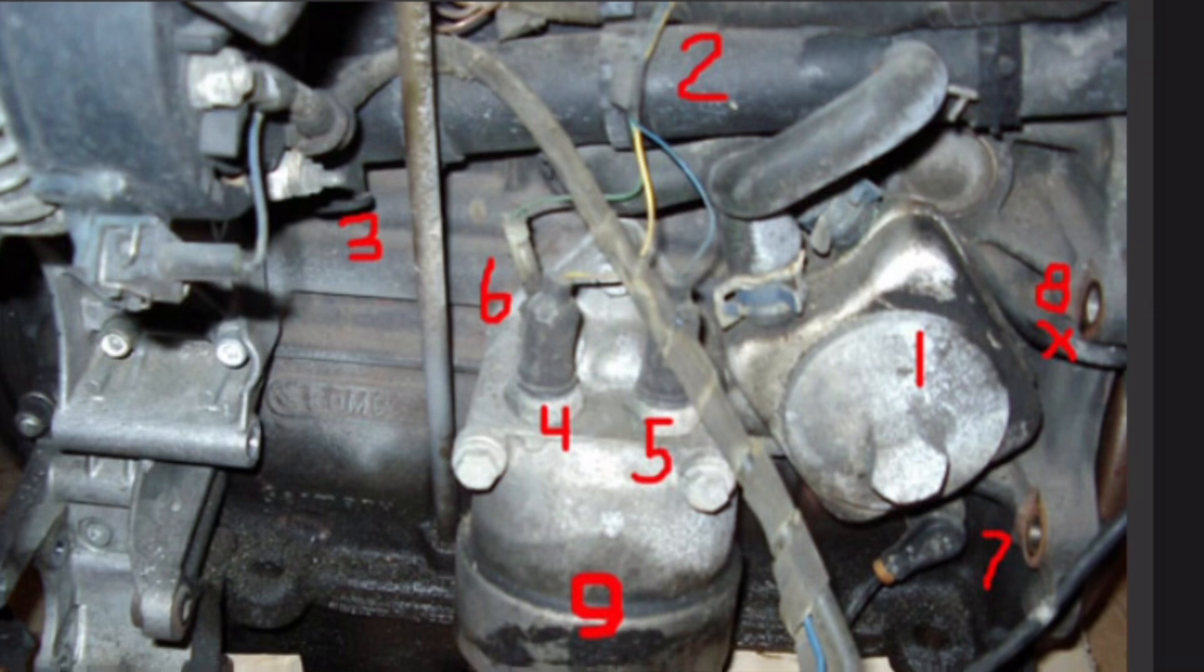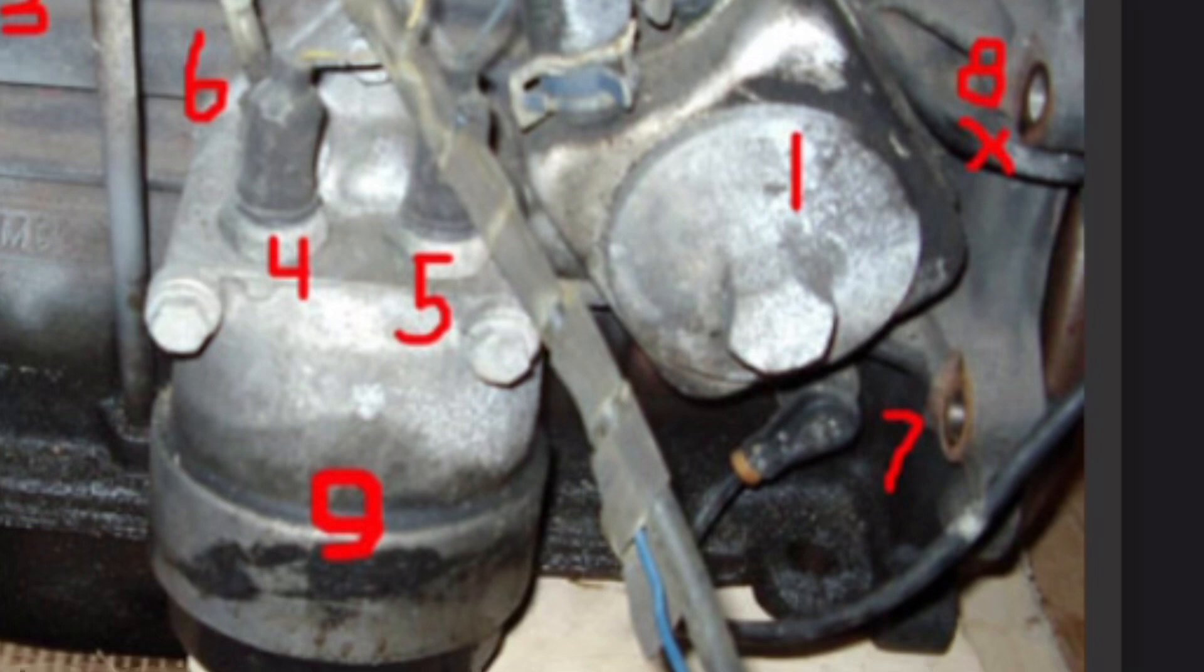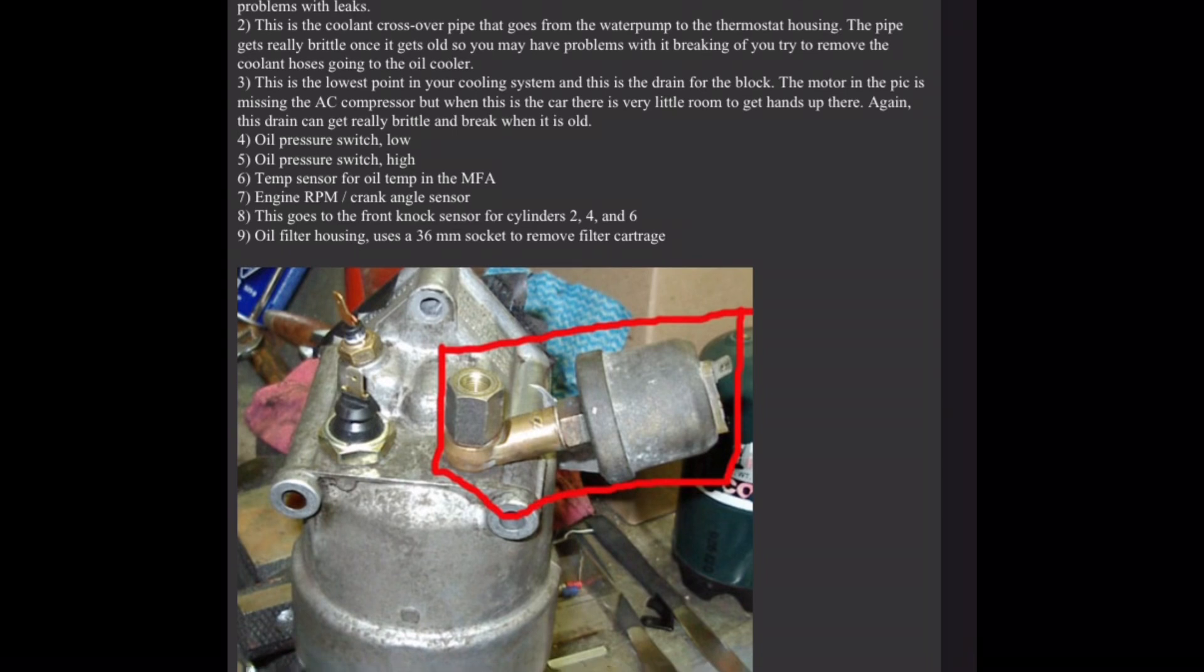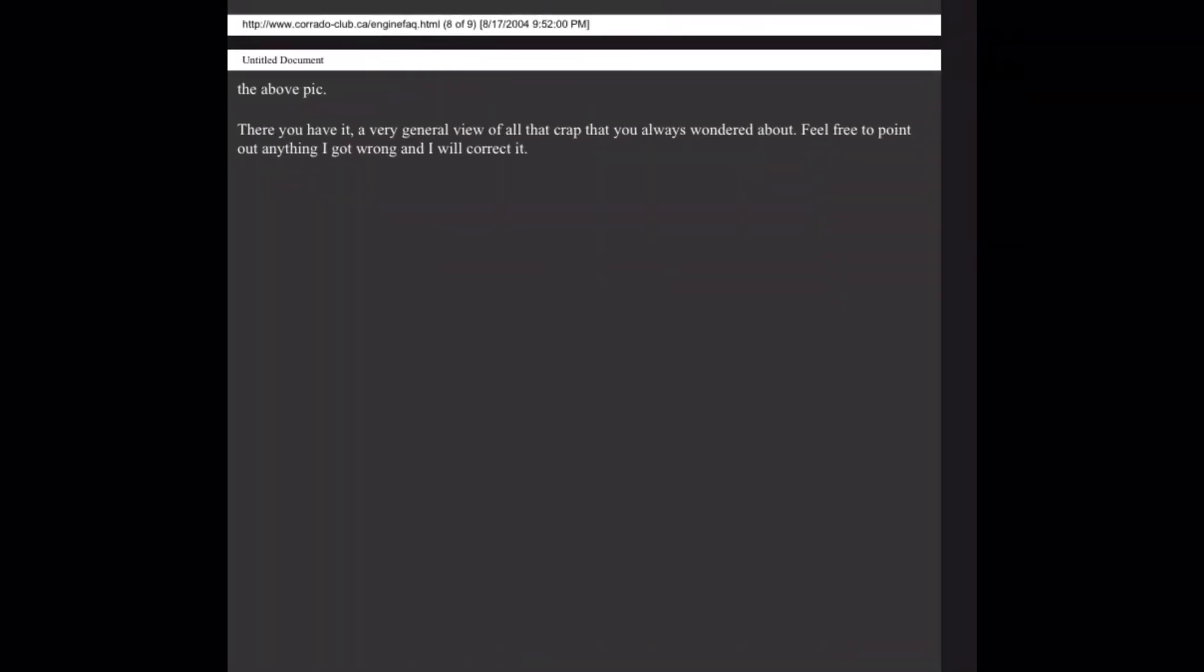Three, this is the lowest point in your cooling system and this is the drain for the block. The motor in the pick is missing the AC compressor but when this is in the car there is very little room to get hands up there. Again, this drain can get really brittle and break when it is old. Four, oil pressure switch low. Five, oil pressure switch high. Six, temp sensor for oil temp in the MFA. Seven, engine RPM crank angle sensor. Eight, this goes to the front knock sensor for cylinders two, four, and six. Nine, oil filter housing. Uses a 36mm socket to remove filter cartridge, pick seven. If you have a VR6 with the newer style interior you will have an oil pressure sending unit like the one circled in the above pick. There you have it, a very general view of all that crap that you always wondered about.